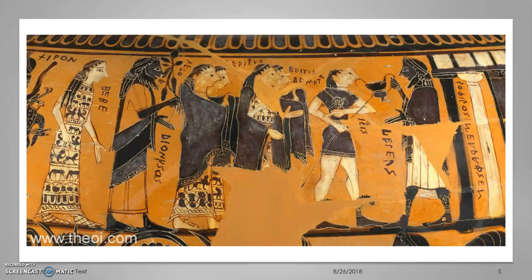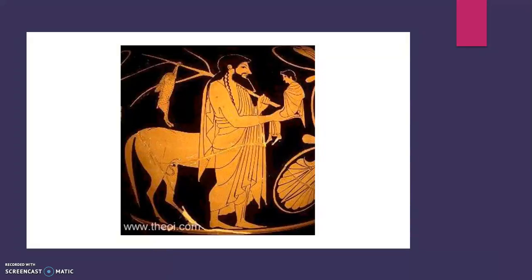Many of the goddesses think they are the most beautiful, and this is the background for the Judgment of Paris. The goddesses who claim to be the most beautiful — Aphrodite, Athena, and Hera — appeal to Zeus to make the decision, but he wisely says no and instead picks some random human who will have to suffer the consequences. So the Judgment of Paris relates back to this wedding between Peleus and Thetis, and we're getting deeper and deeper into the cause of the war.